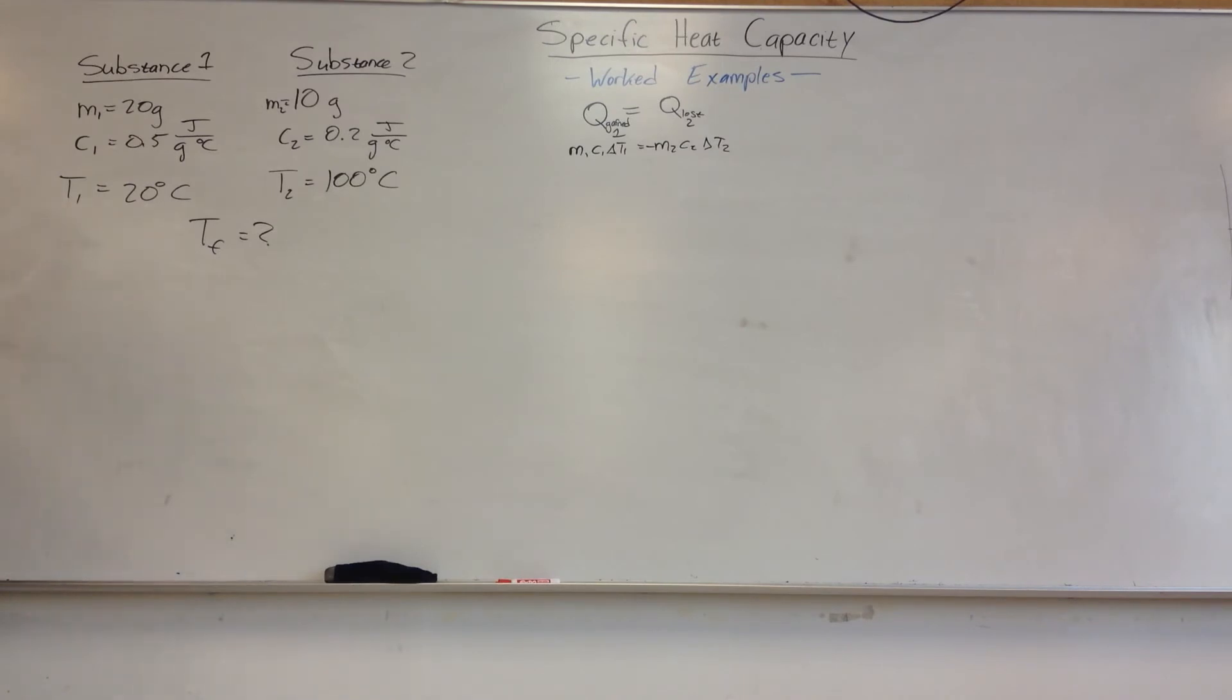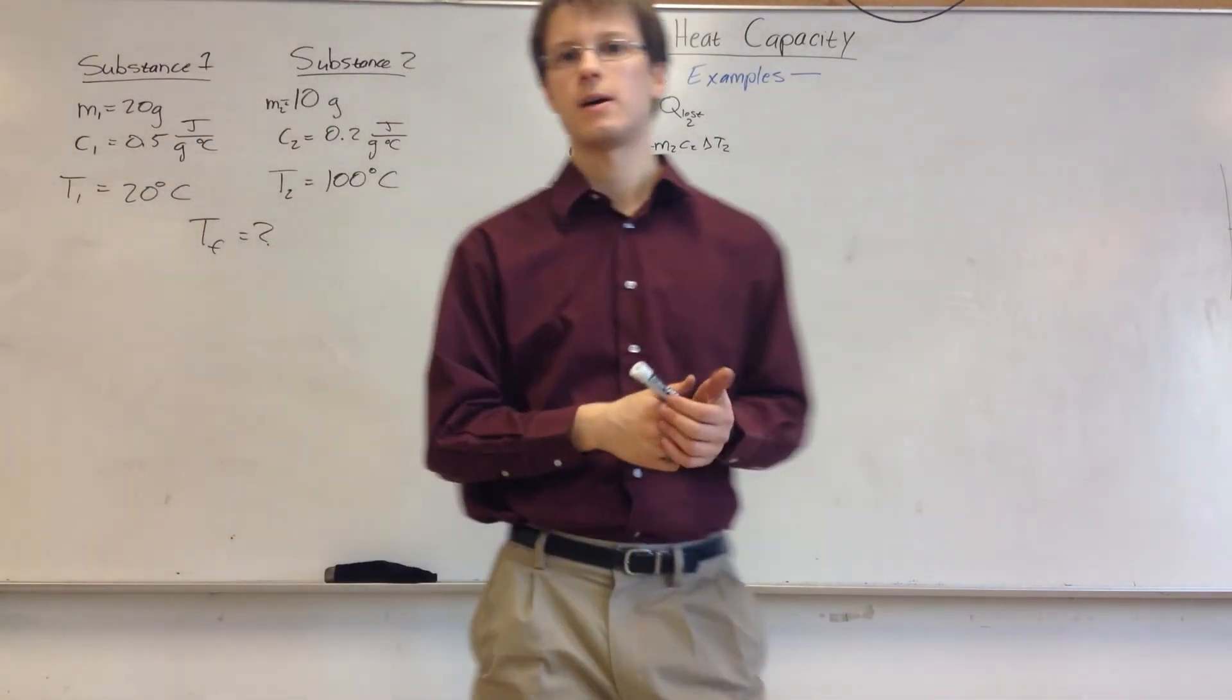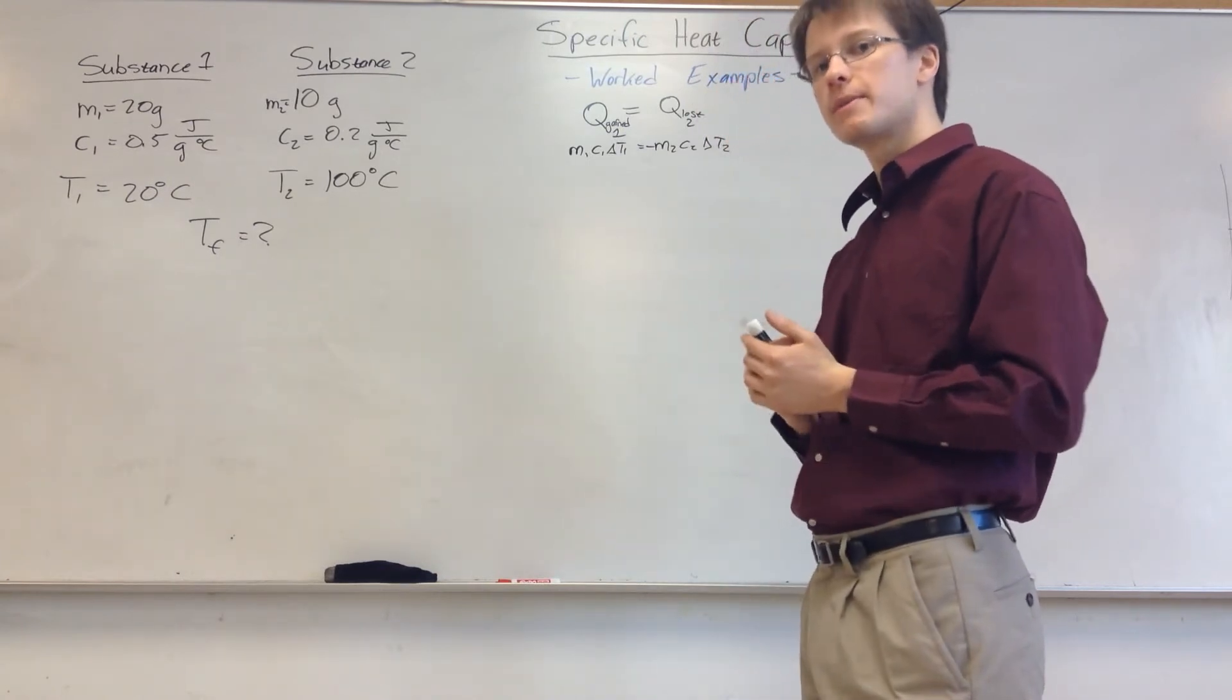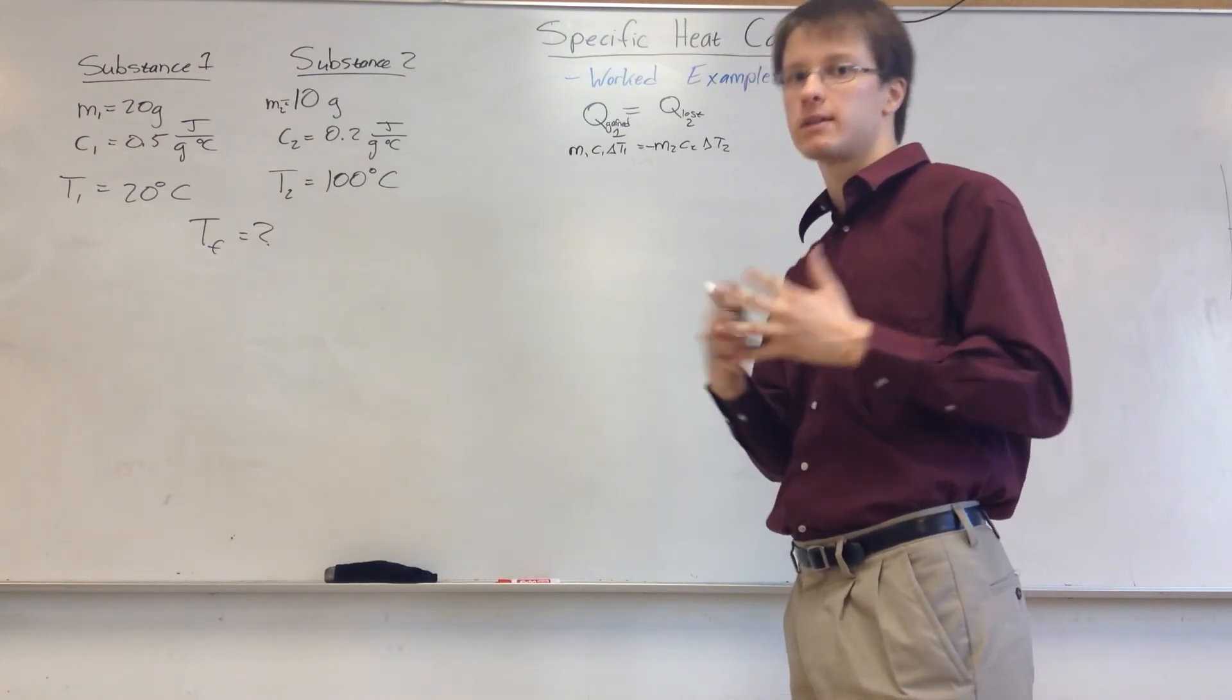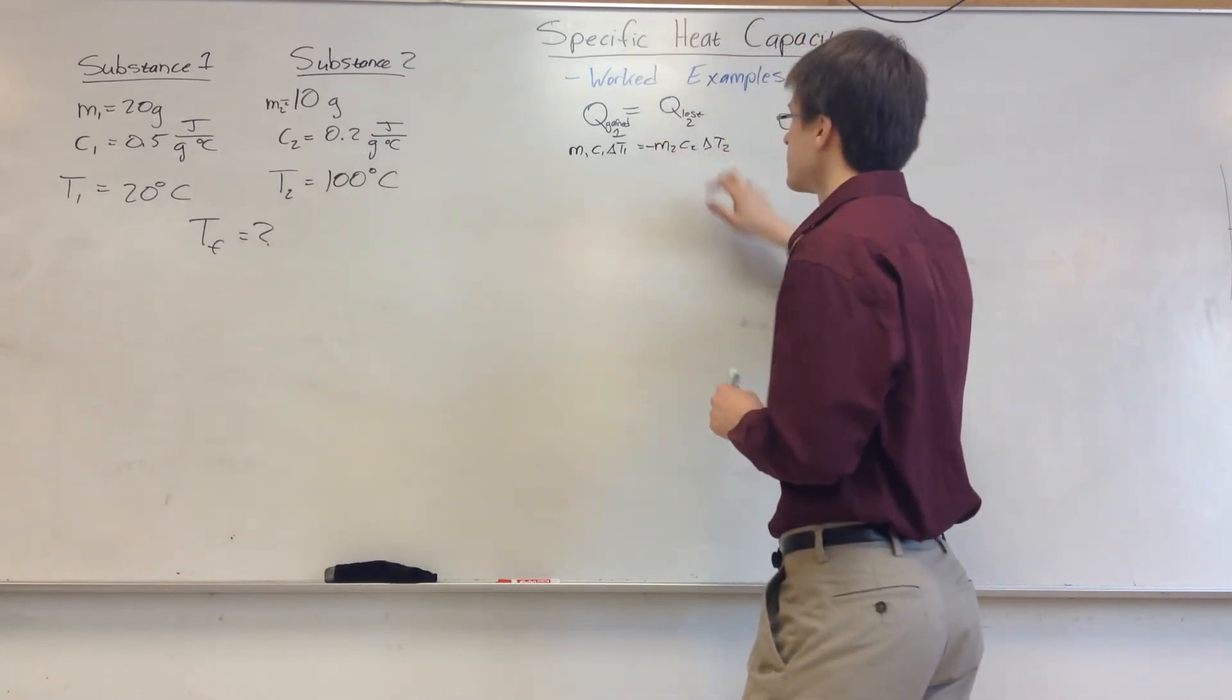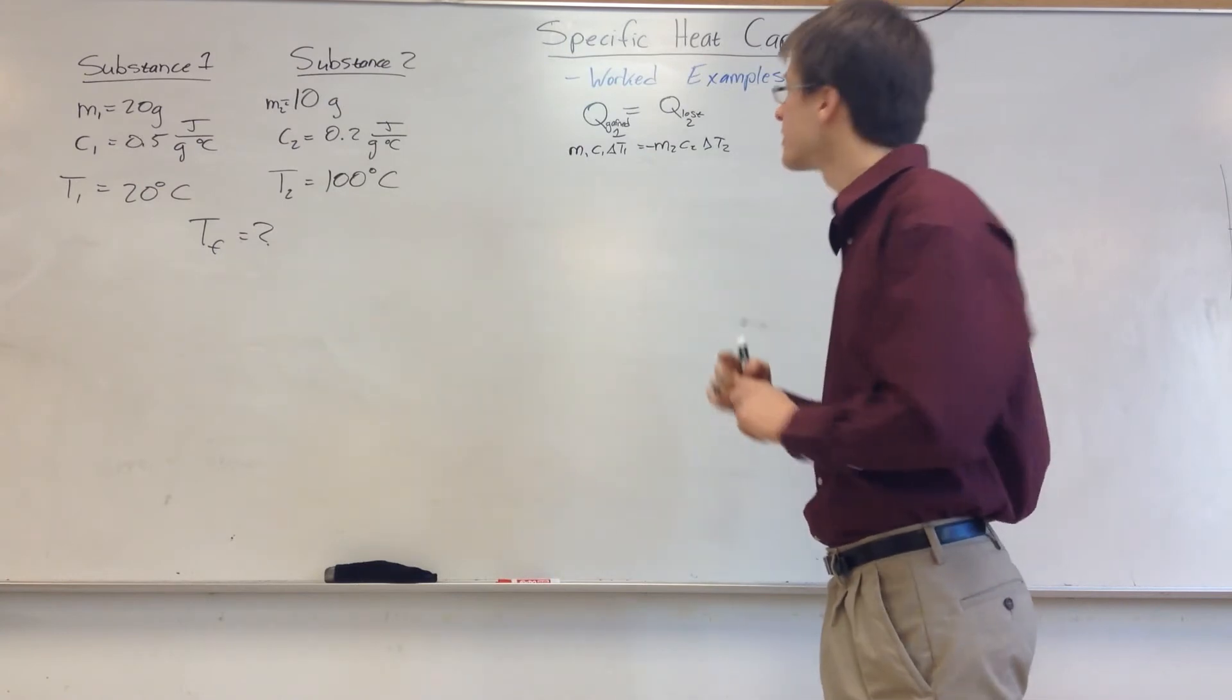So I always recommend going through this and solving algebraically first, and then putting in all the numbers at once, and you'll have an easier time. But you don't have to, so I'm going to go through and do it where you put in the numbers first, because I feel like that's what most people actually do, regardless of what I say. So let's go ahead and do this. We have MC delta T equals negative MC delta T, and I want to plug everything in, and I want to solve for TF.